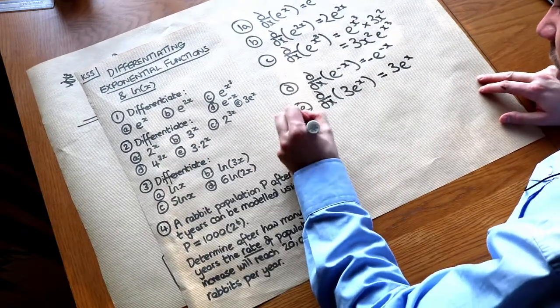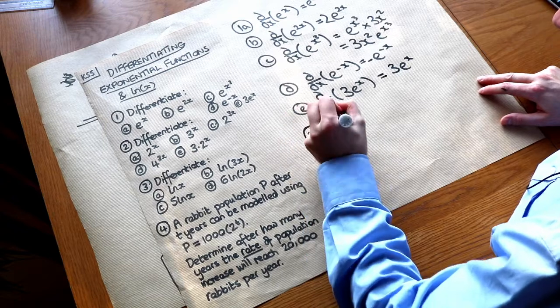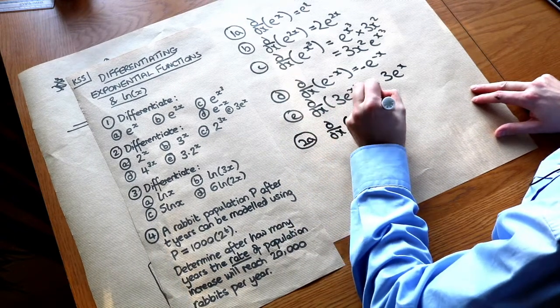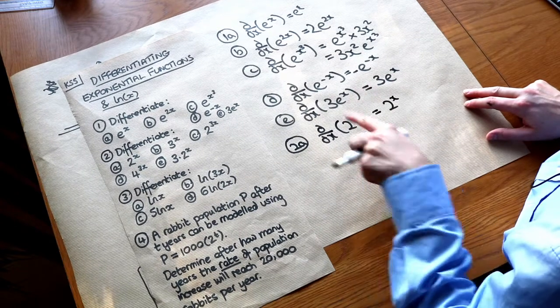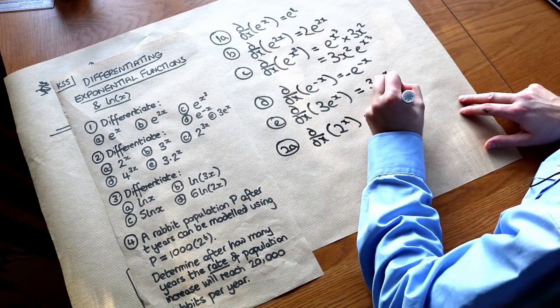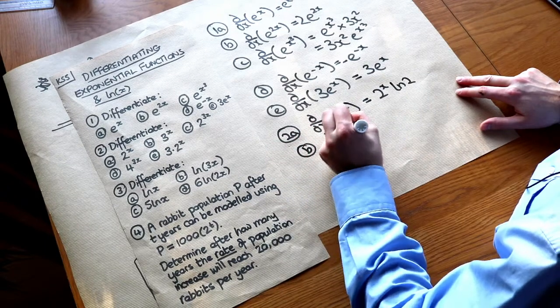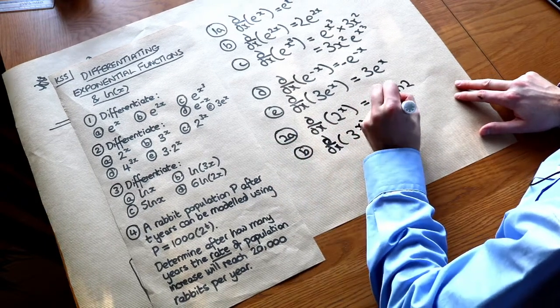And what about these things here? So 2a we want to differentiate 2 to the x. Well we've already seen that one. We just have the same thing but we multiply it by ln of the base. So we get ln 2. B, 3 to the x differentiated we would just get 3 to the x ln 3.